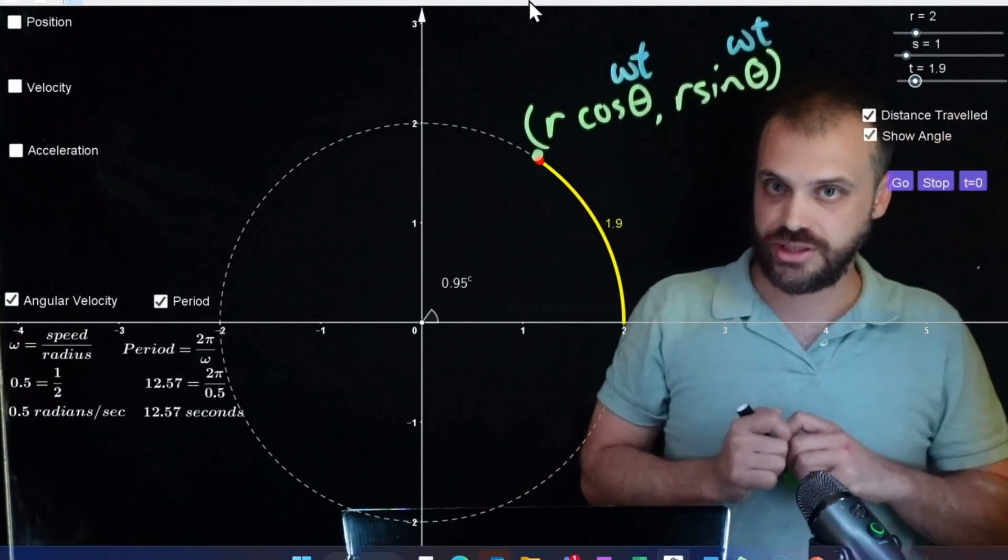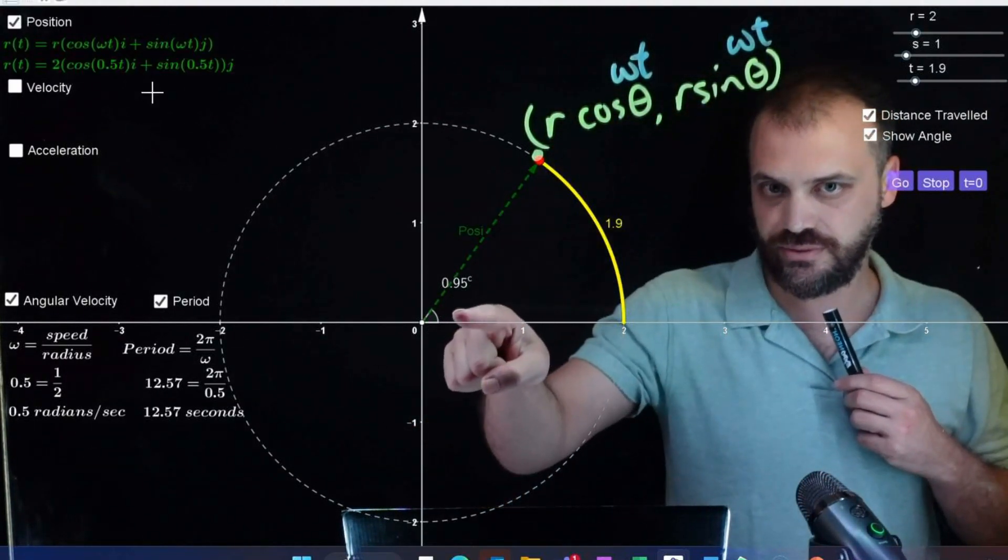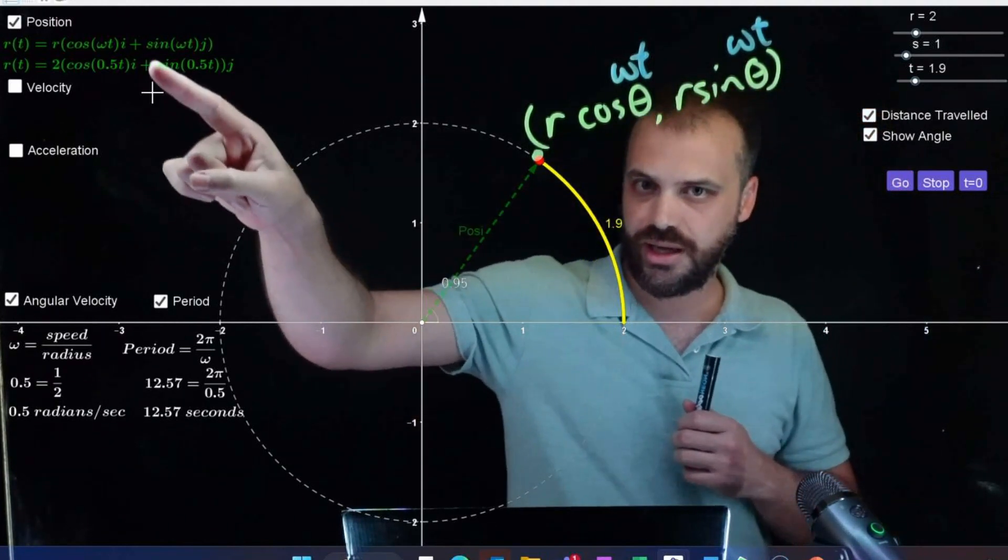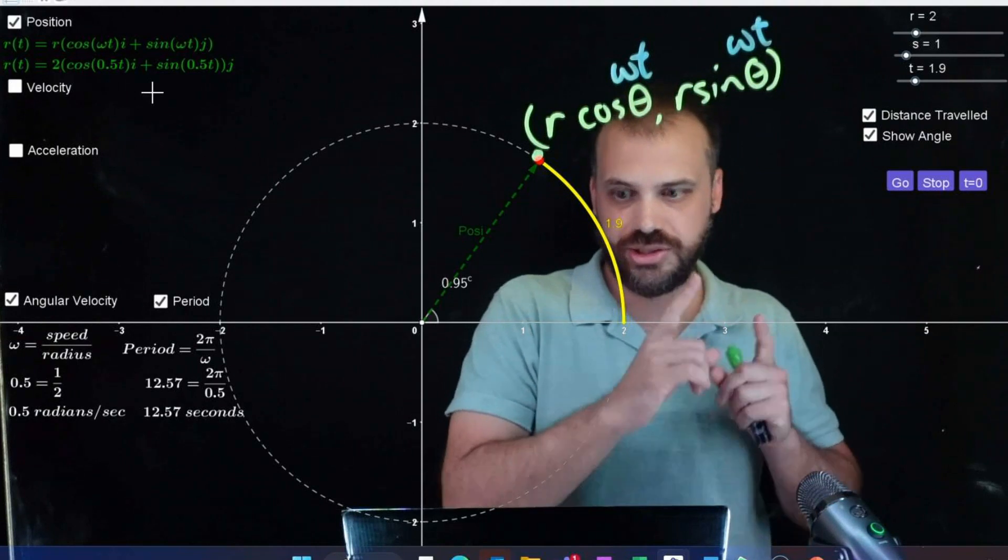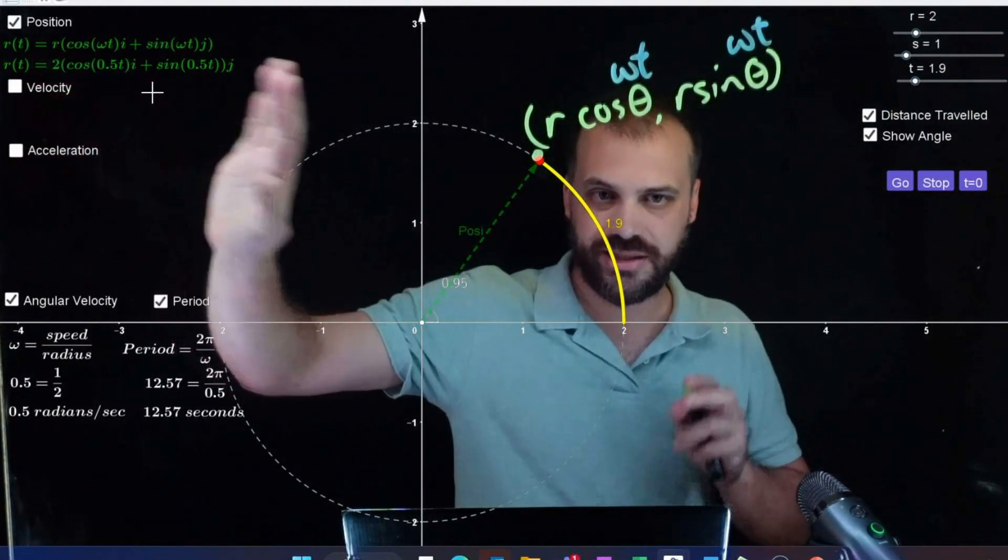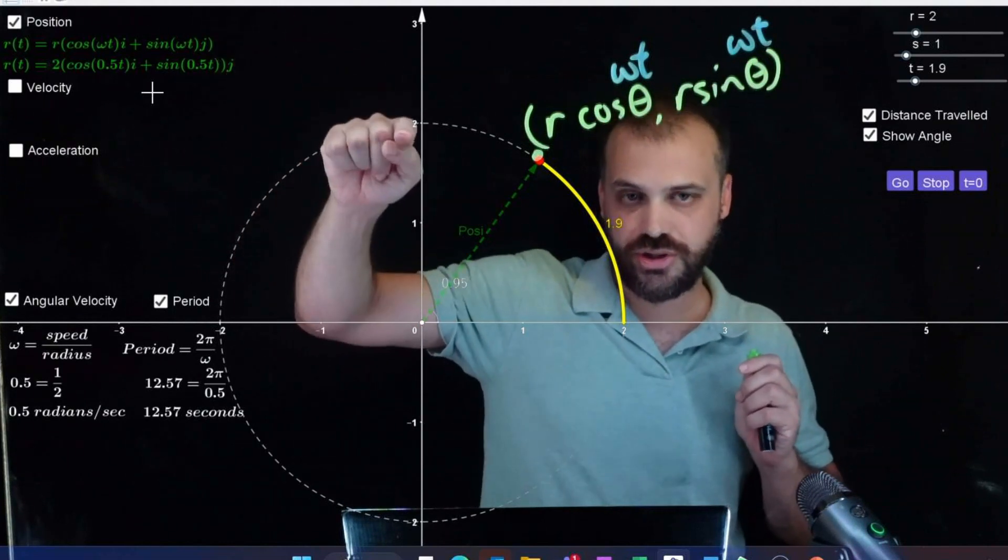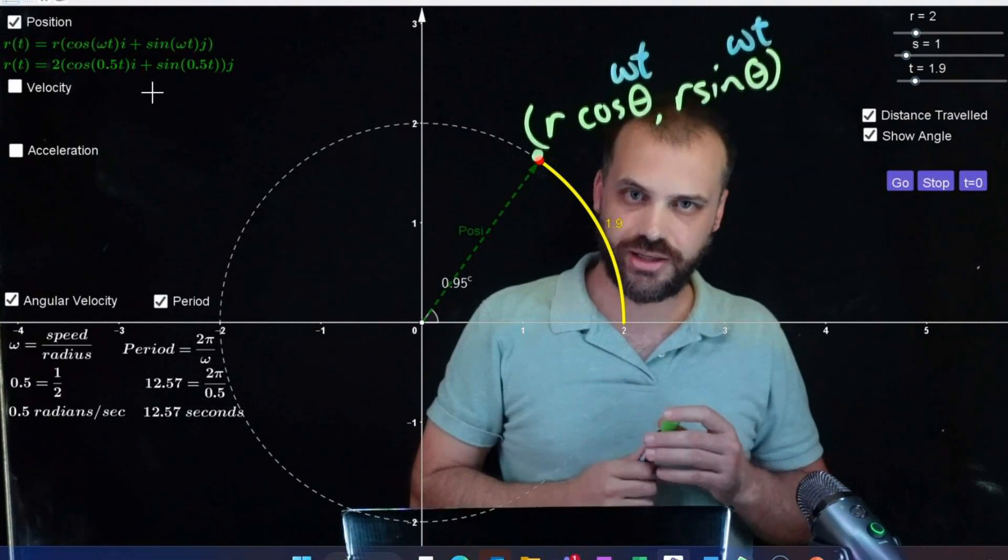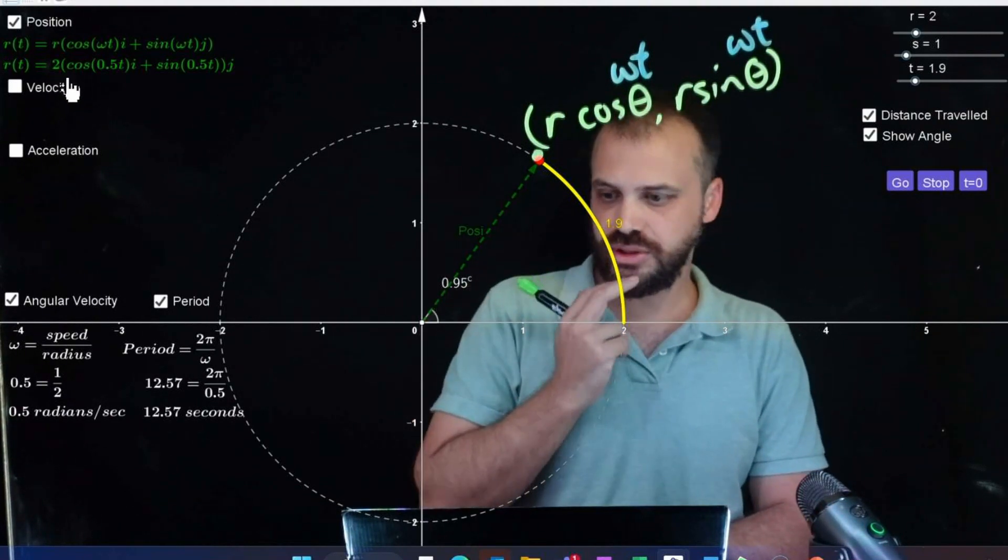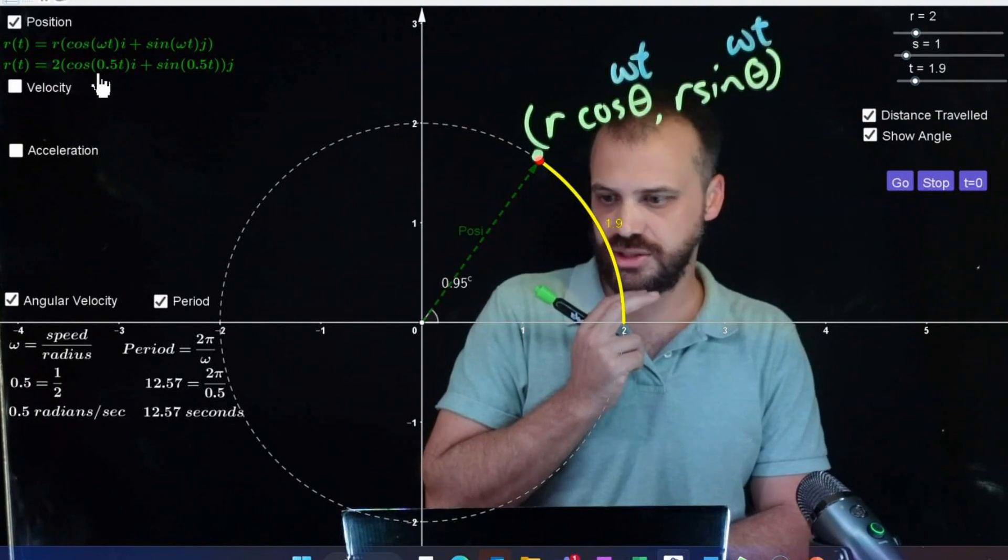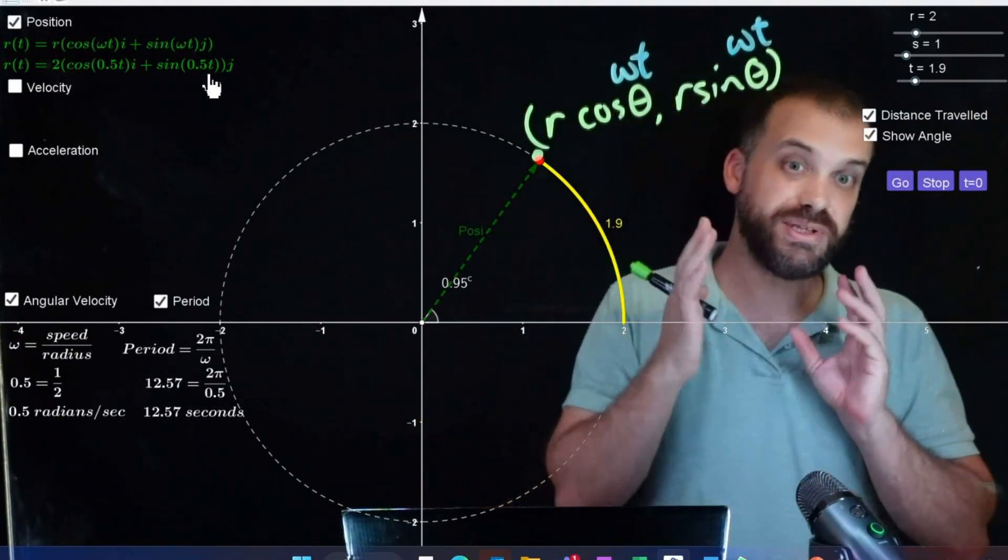So putting all of this together, we get a position vector. This green dotted vector here from the origin to our point is describing our point. And it's given by this value here: r cos(ωt)i + sin(ωt)j. Now notice that the r is outside of the brackets, so the r is being connected or being applied to cos(ωt)i and sin(ωt)j. And so specifically at the moment, the position of our red dot is given by 2, the radius of the circle, cos(0.5t), so angular velocity t i plus sin angular velocity t j. That is our position vector.